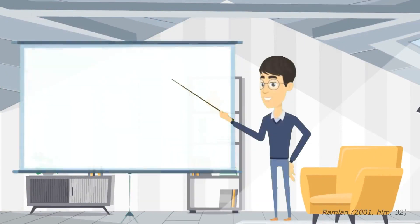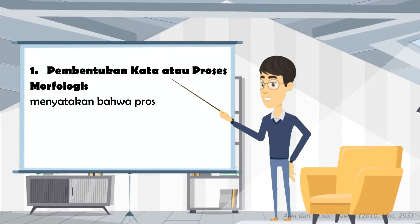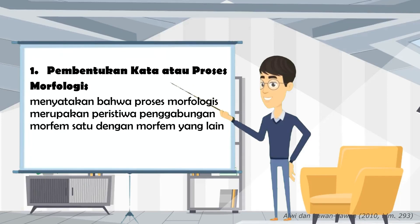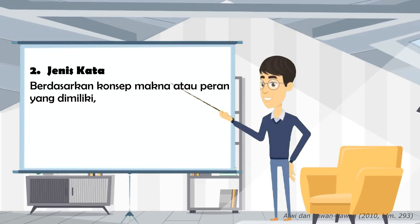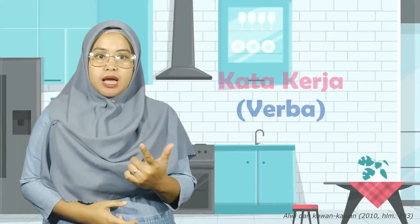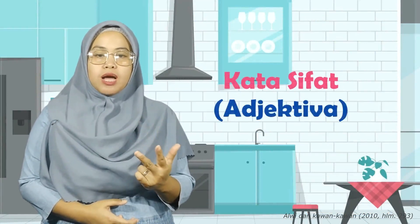Berikut penjelasan dua pembagian kata. Pertama, pembentukan kata atau proses morfologis, yaitu peristiwa penggabungan morfem satu dengan morfem yang lain sehingga terbentuk sebuah kata. Kedua, jenis kata berdasarkan konsep makna atau peran yang dimiliki, terdapat lima jenis kata yaitu kata benda atau nomina, kata kerja atau verba, kata sifat atau adjektiva, kata keterangan atau adverbia, dan kata tugas.